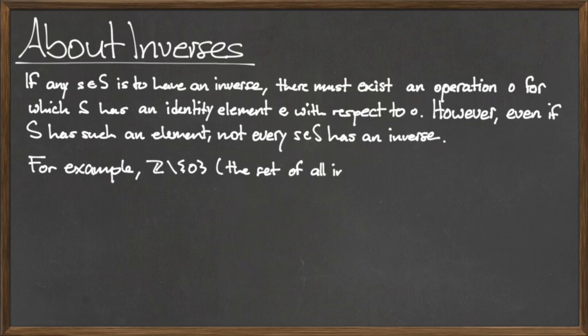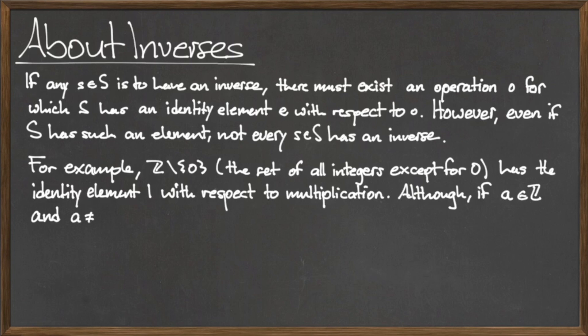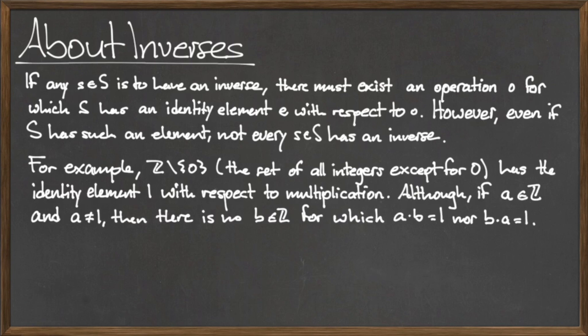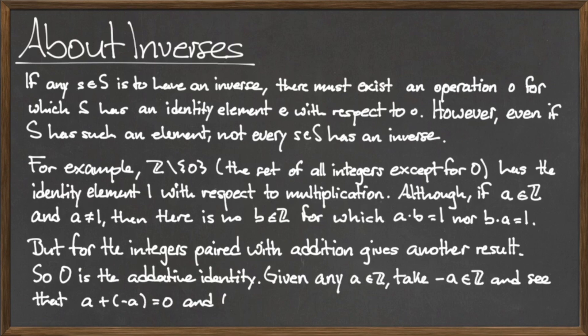For example, consider the set Z minus {0}, which is the set of all integers except for 0. For this set, the element 1 is the identity element with respect to the operation of multiplication. However, for any integer a in this set that is not equal to the identity element 1, there is no integer b for which a times b or b times a equals 1. This is an example for which an identity element does exist, but no inverse elements exist.